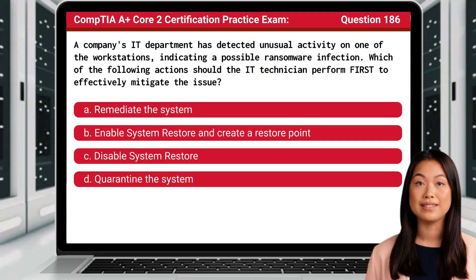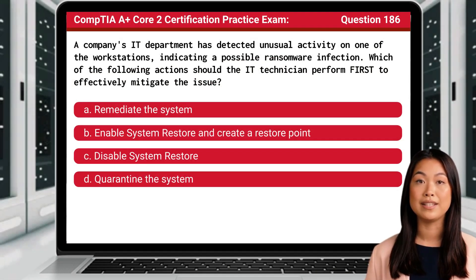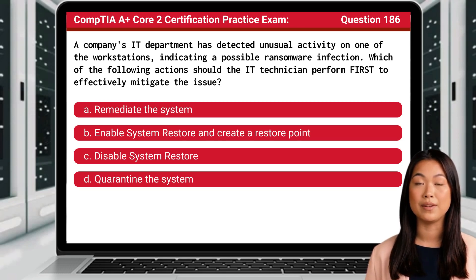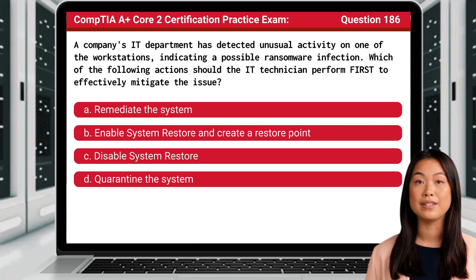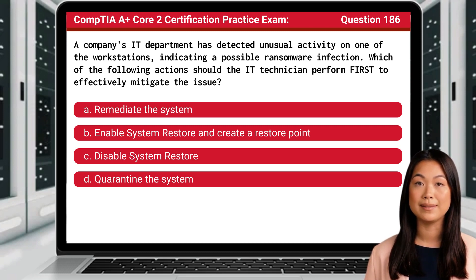Question 186. A company's IT department has detected unusual activity on one of the workstations, indicating a possible ransomware infection. Which of the following actions should the IT technician perform first to effectively mitigate the issue?